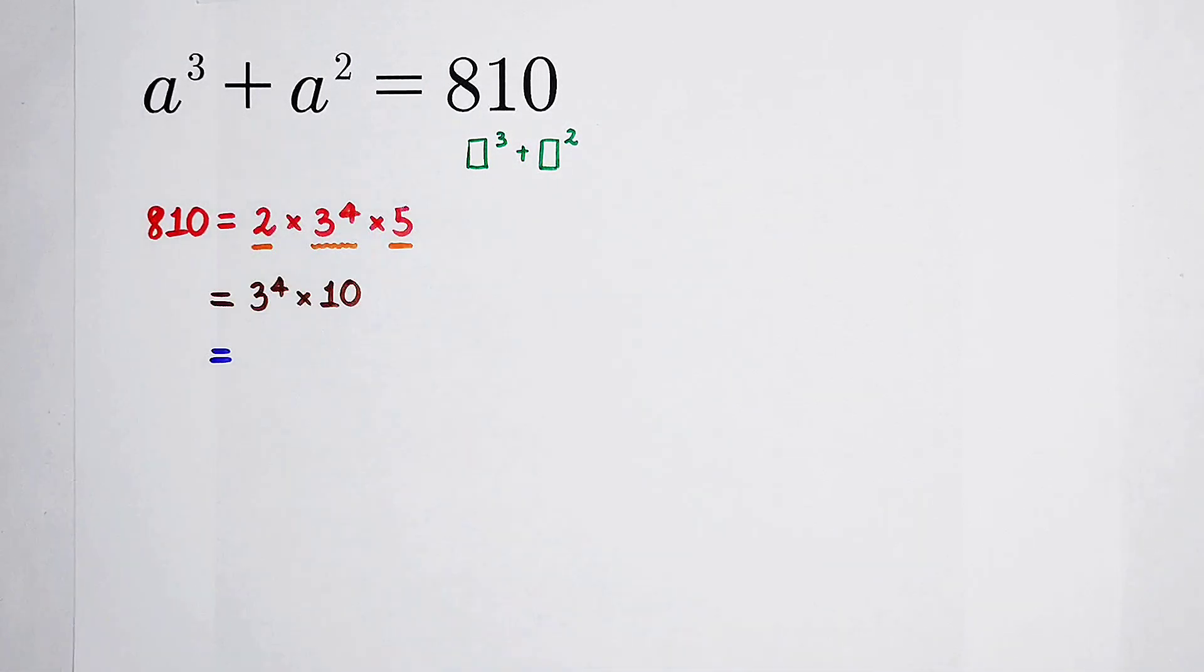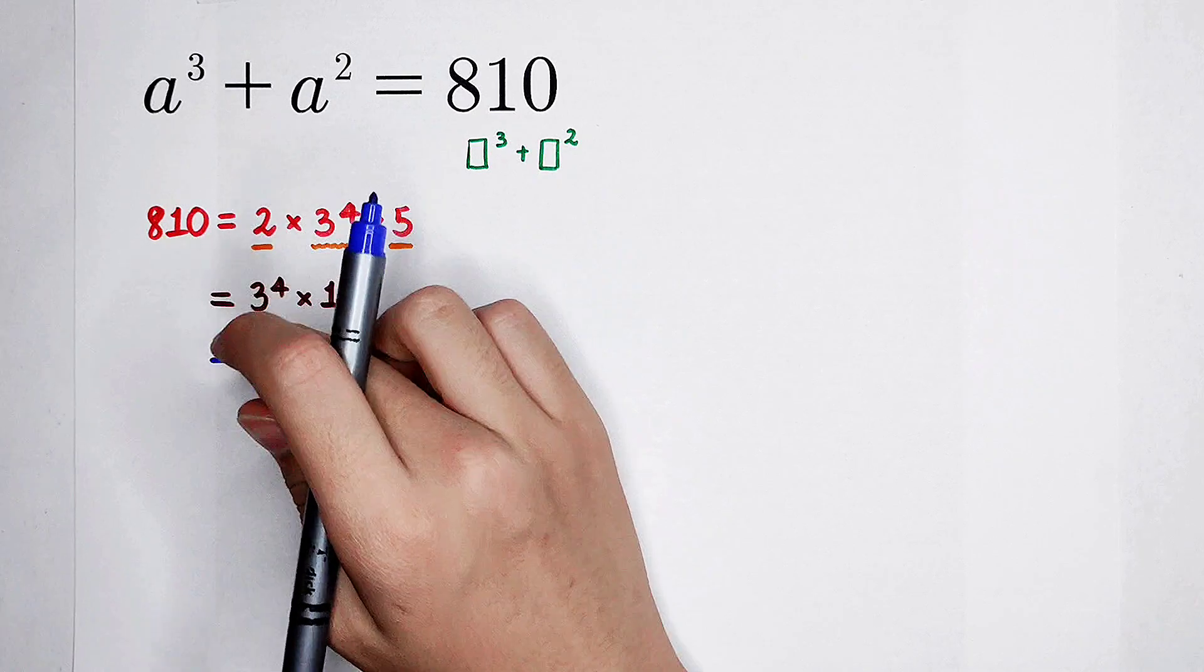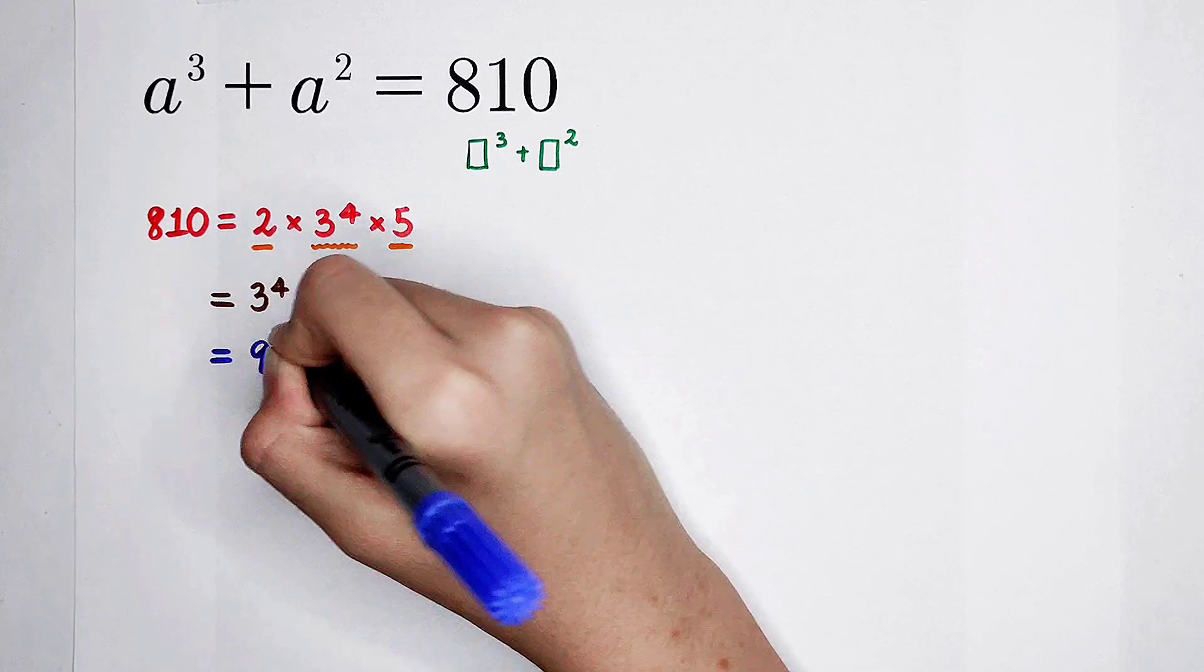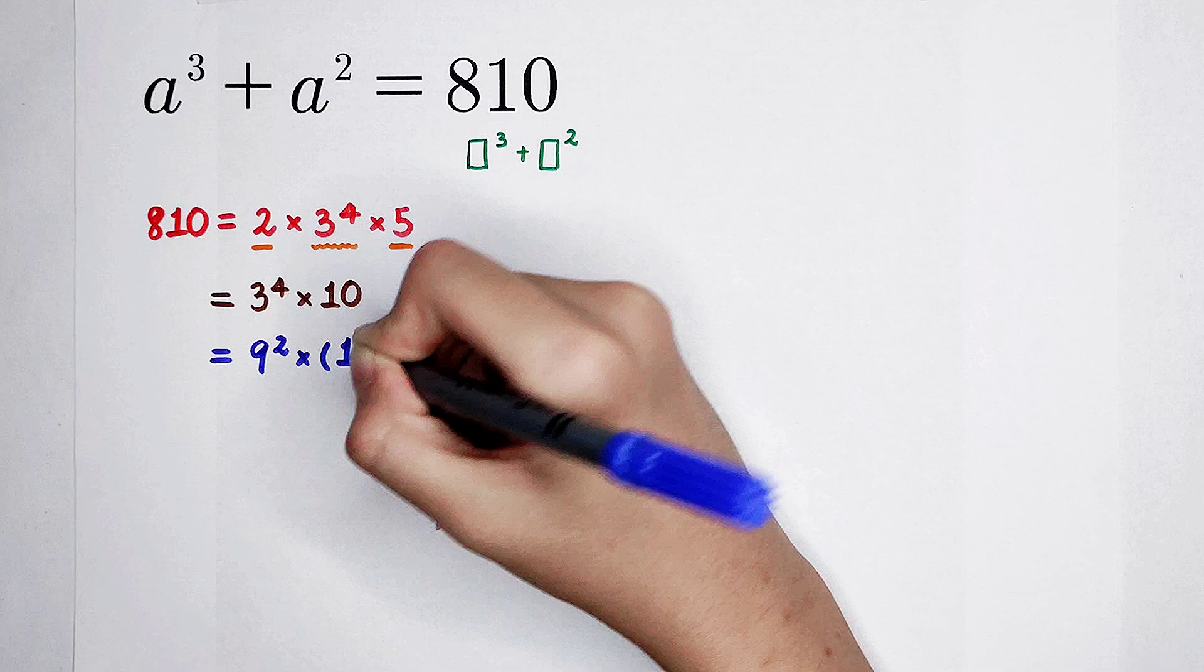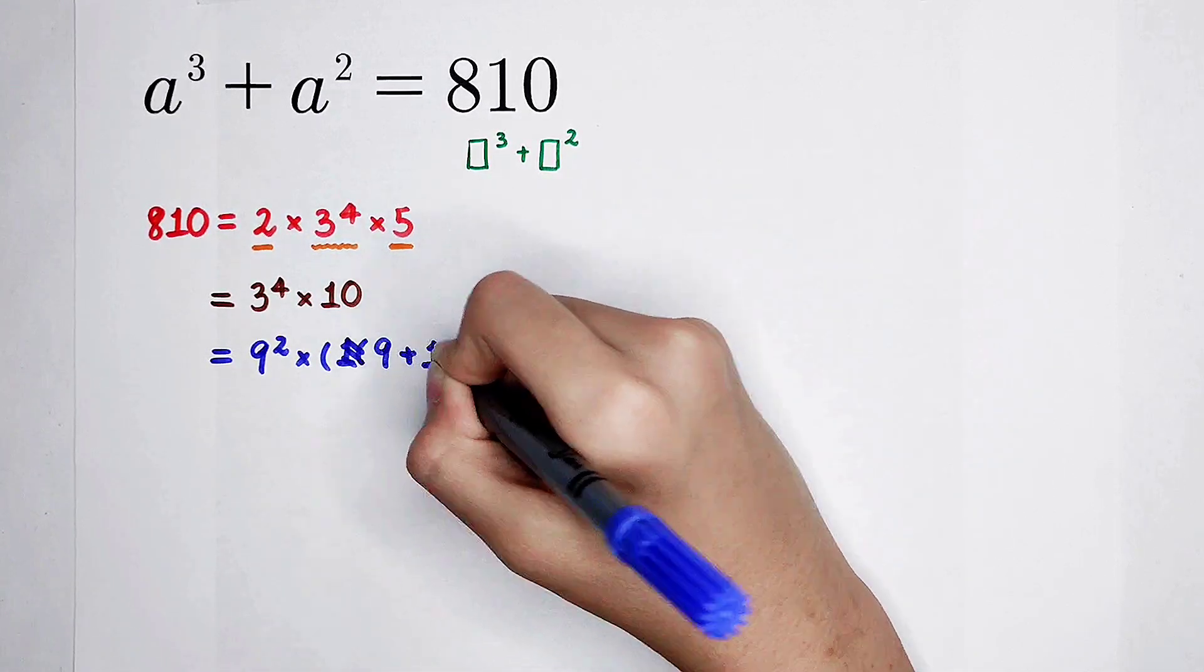3 to the power of 4 is quite large, but it can be written as 9 squared. It can be written as 3 squared and then all squared. Because 3 to the power of 2 is 9, so it is 9 squared. And then 10 is 9 plus 1.